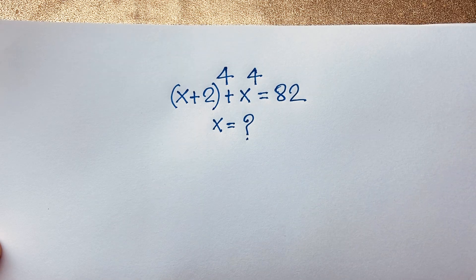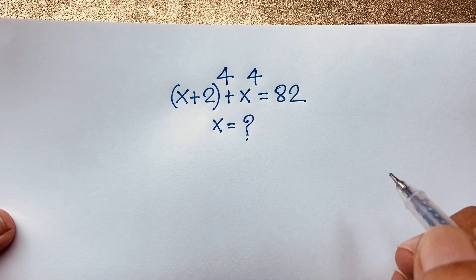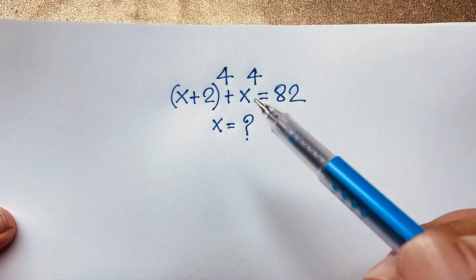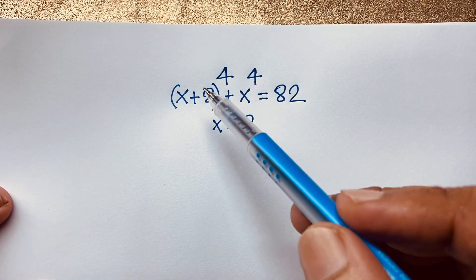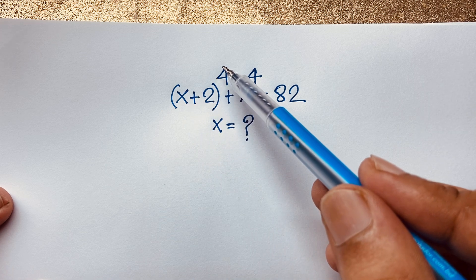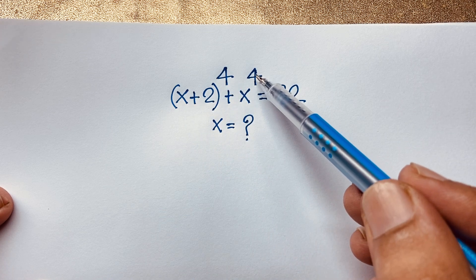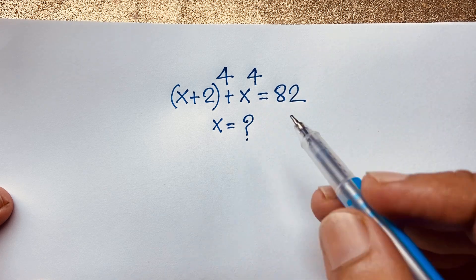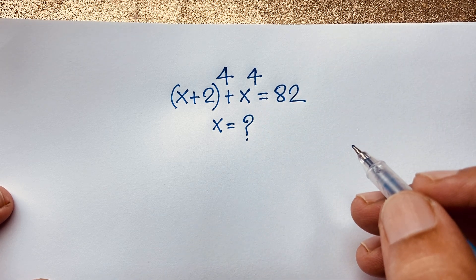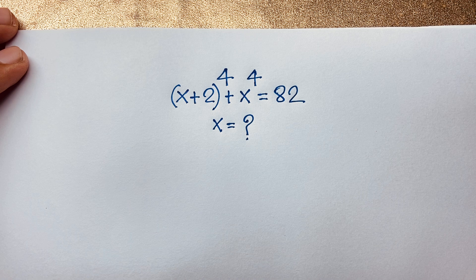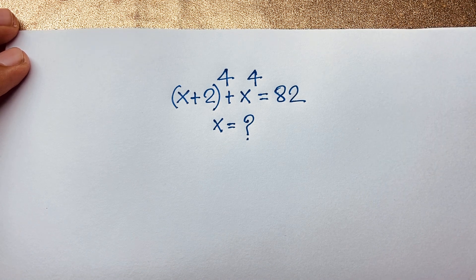Hello everyone, welcome to Russell's classroom. Today we are solving a nice math Olympiad question. This exponential math problem: (x + 2)^4 + x^4 = 82. We are finding out the value of x in this math problem, and how to solve this interesting math Olympiad question.